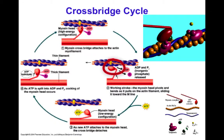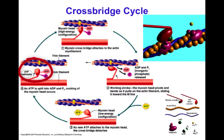After the power stroke, the crossbridge no longer has high affinity for actin and dissociates. ATP then attaches, and hydrolysis re-cocks the head for the next cycle. In this way, hydrolysis of ATP provides the chemical energy for the mechanical work of the power stroke. The cycle ensures crossbridges not only attach but detach so they can re-attach and continue to shorten the muscle — if all crossbridges only attached and stayed, the muscle would just get stiffer but not shorter, and couldn't generate force by shortening against a load.